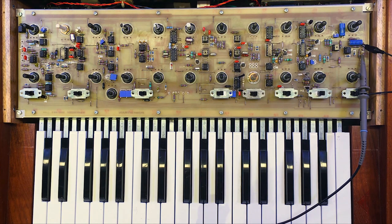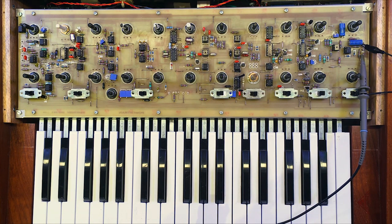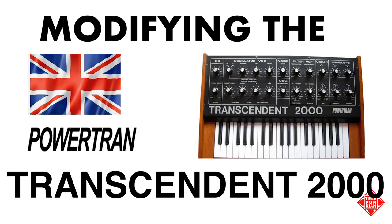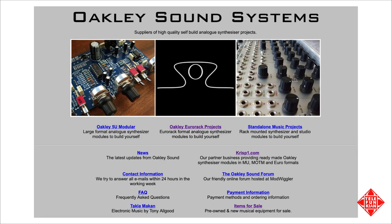That's an approach that those of you who may be owners of T2000s may want to try. And if you do try it and have success, please let me know in the comments. Well, that's all for today's video. I hope you found it useful and entertaining. A special thanks to Tony Allgood from Oakley Sound Systems for humoring me and revisiting his post from all those years ago. Oakley Sound Systems is famous for their TB-3030, one of the earlier reworkings of the famous TB-303. Tony still makes and sells high-quality modular kits in the 5U and Euro rack formats. Be sure to check out his website at www.oakleysound.com.